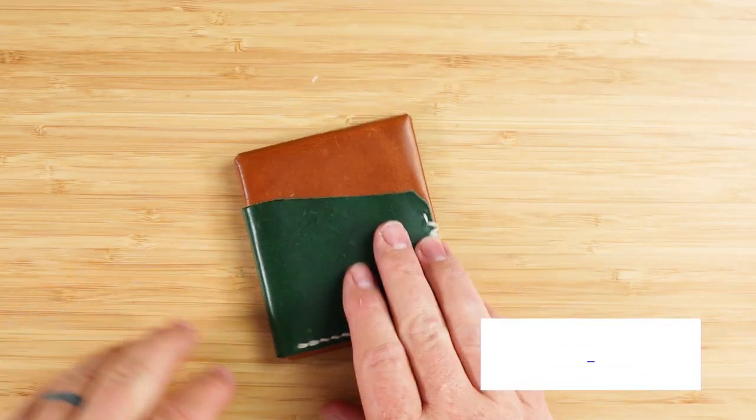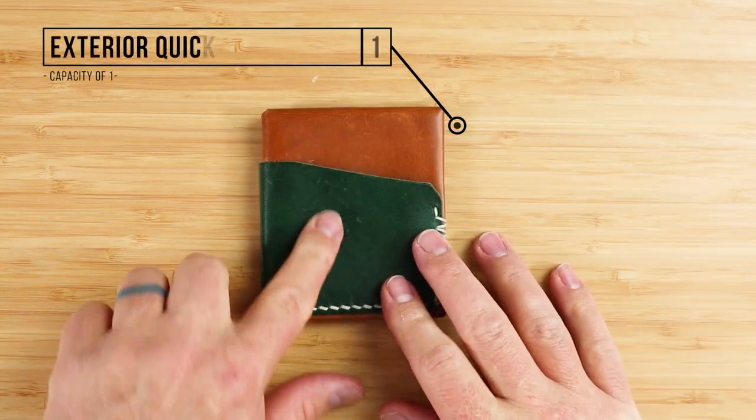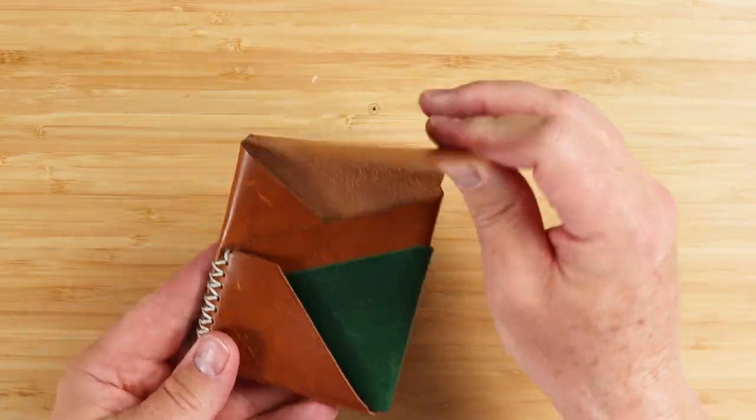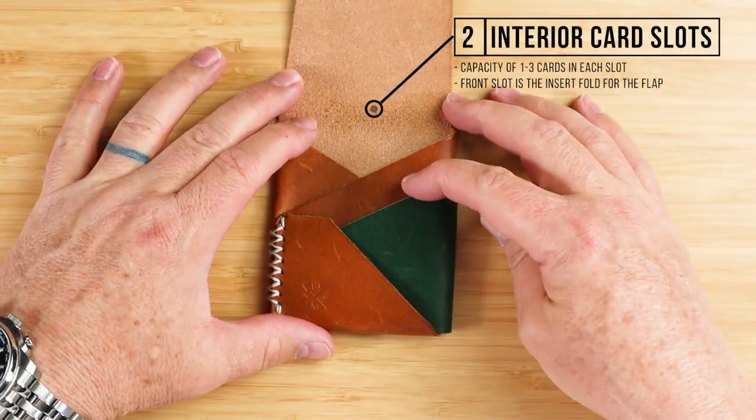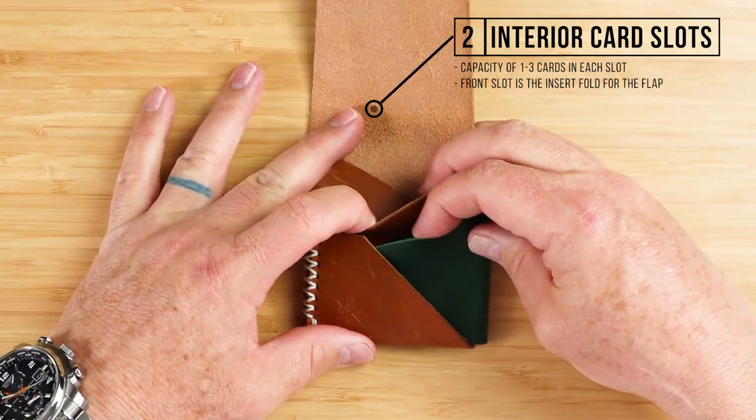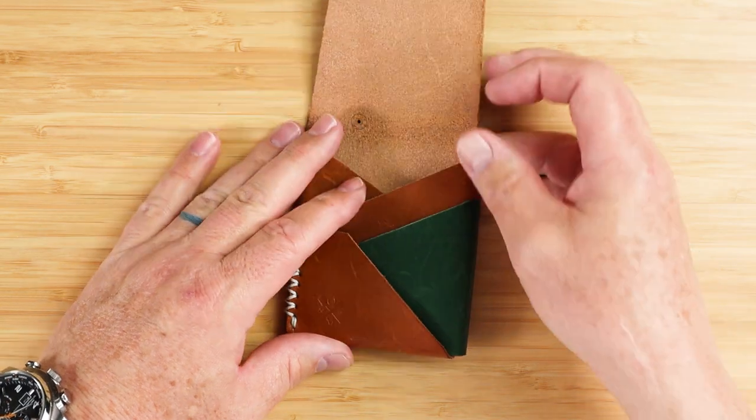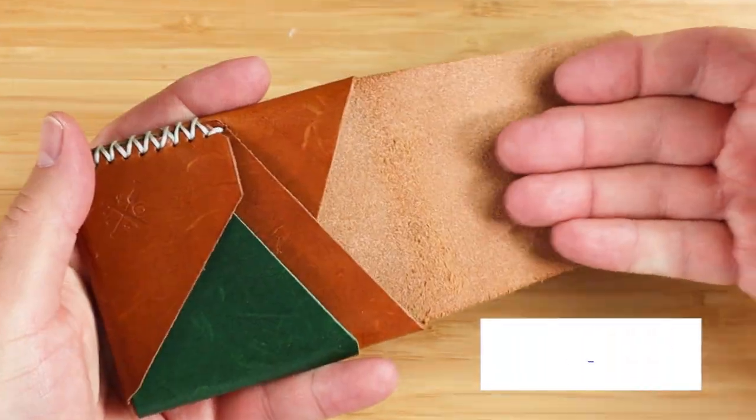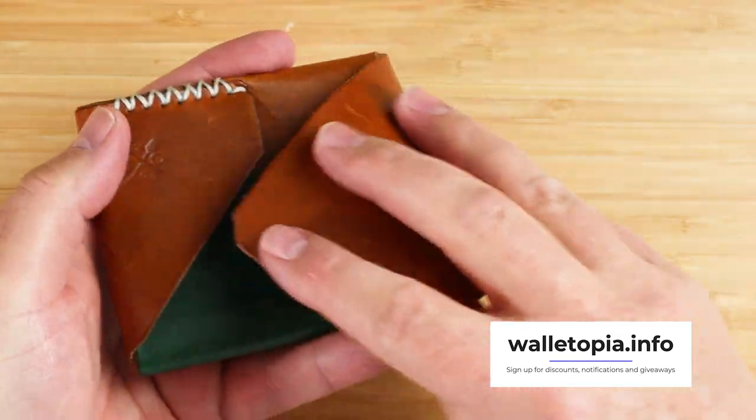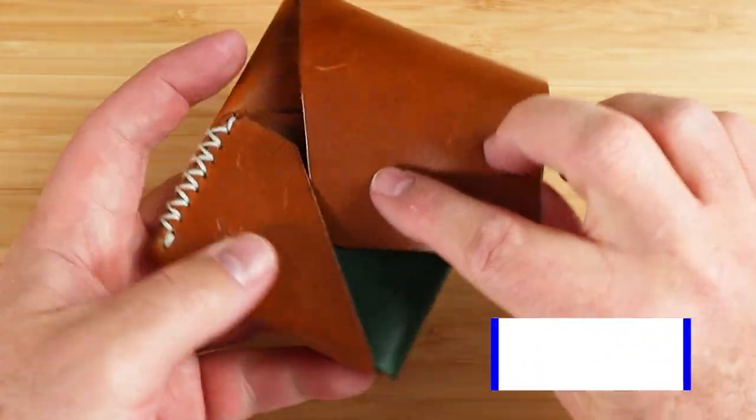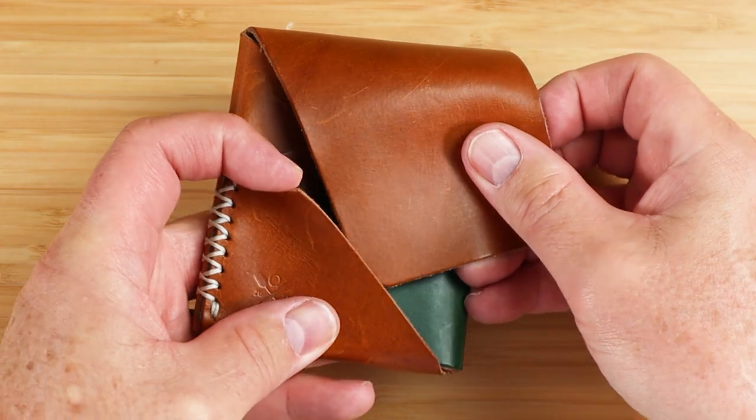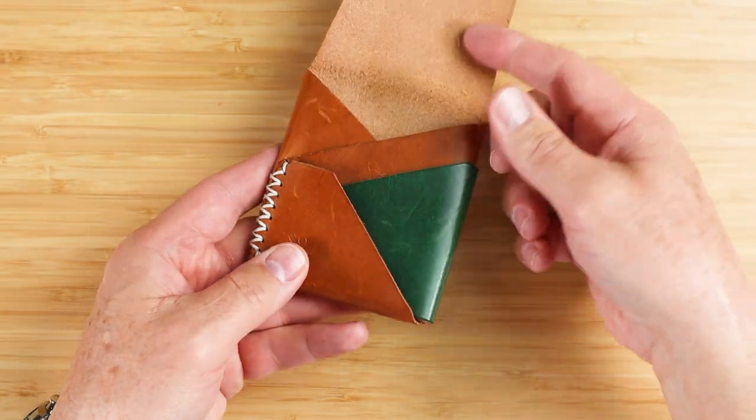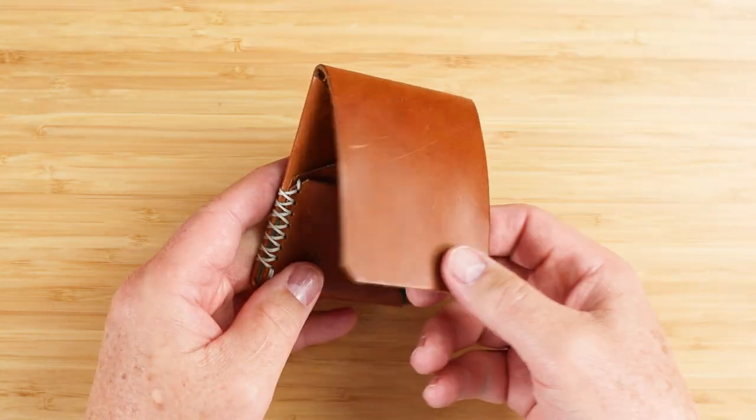From a feature perspective on the exterior, we have this quick access card slot, capacity of one to two cards on the interior. If we open the security flap, we have capacity for one to two cards on two slots, this right here and here, one to three cards each and an interior cash slot right here. This is a cash wrap, put cash in, it folds over. And then this right here is not really a slot for cards or anything else. This is really to hold the security flap in. And this longer flap facilitates that cash wrap capability.